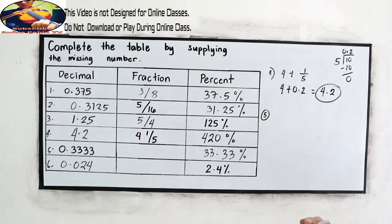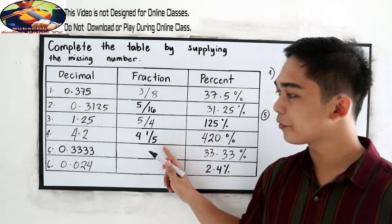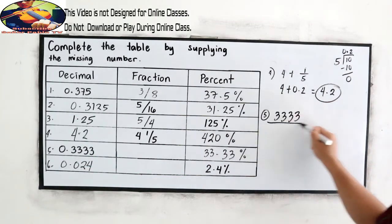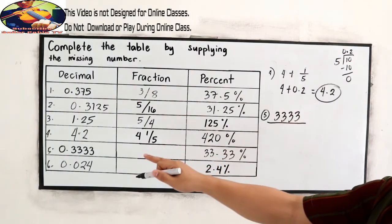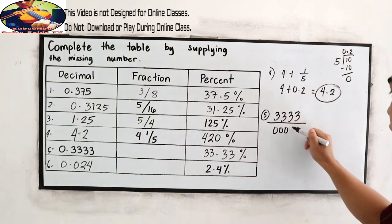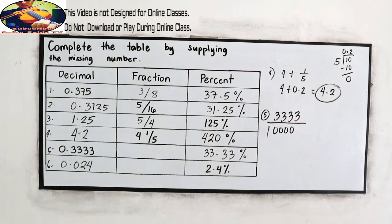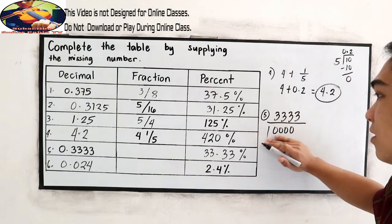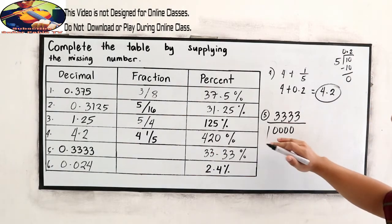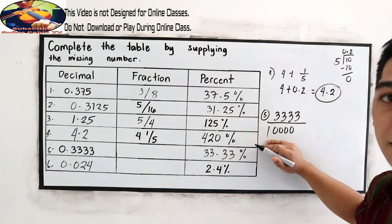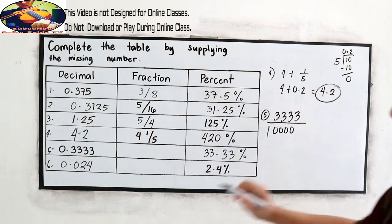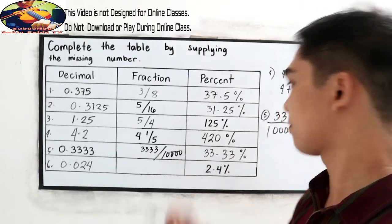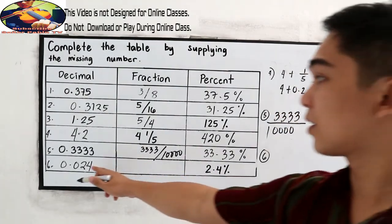Next number 5, decimal going to fraction. So copy 3333 over we have 4 decimal places 1, 2, 3, 4. 10,000. Now is it divisible by 3 or a number? None. So this will be our final answer 3333 over 10,000.